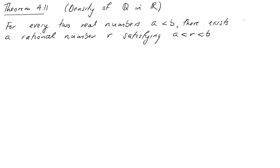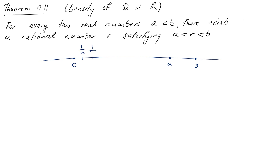We state the density theorem as follows: for every two real numbers a < b, there is a rational number between them. For the sake of argument, assume they're positive on the number line. The idea is that if we take a small enough denominator n, we get a sequence of rationals 1/n, 2/n, 3/n, ... and if they are finely enough spaced, there will be an m/n between a and b. We want to choose n large enough so the spacing is sufficiently fine.